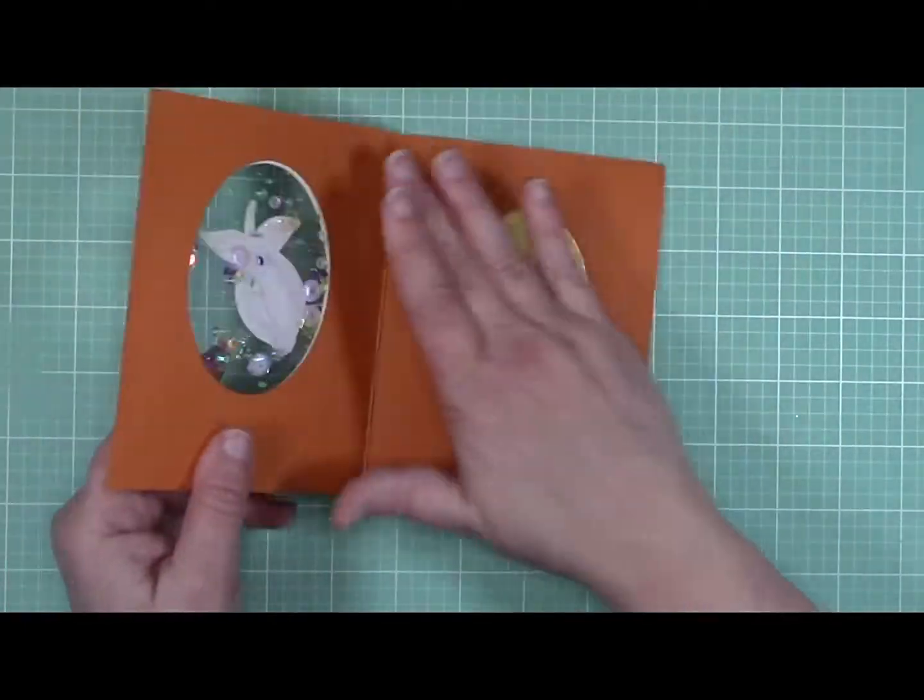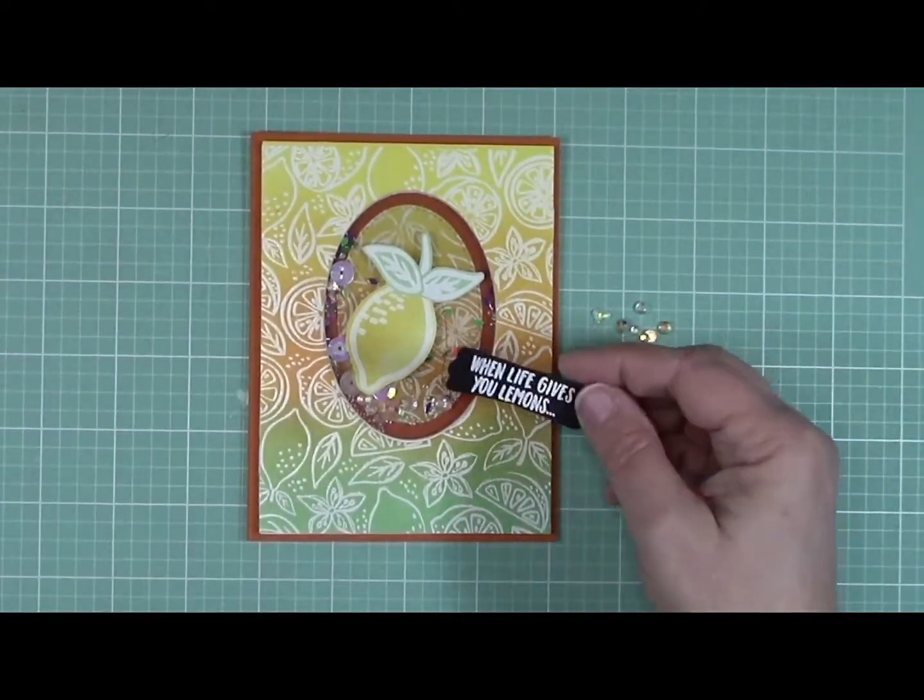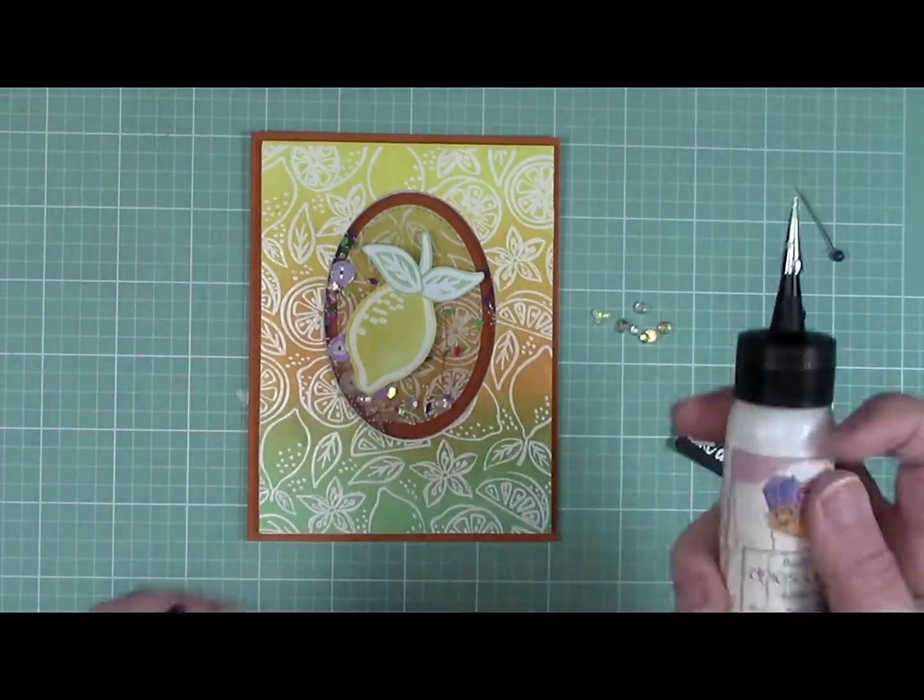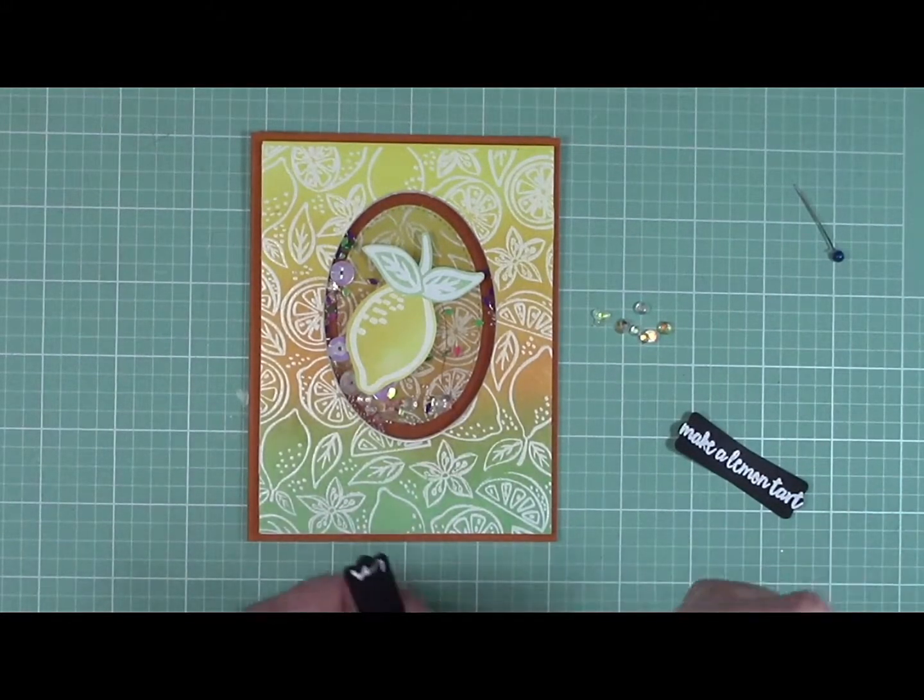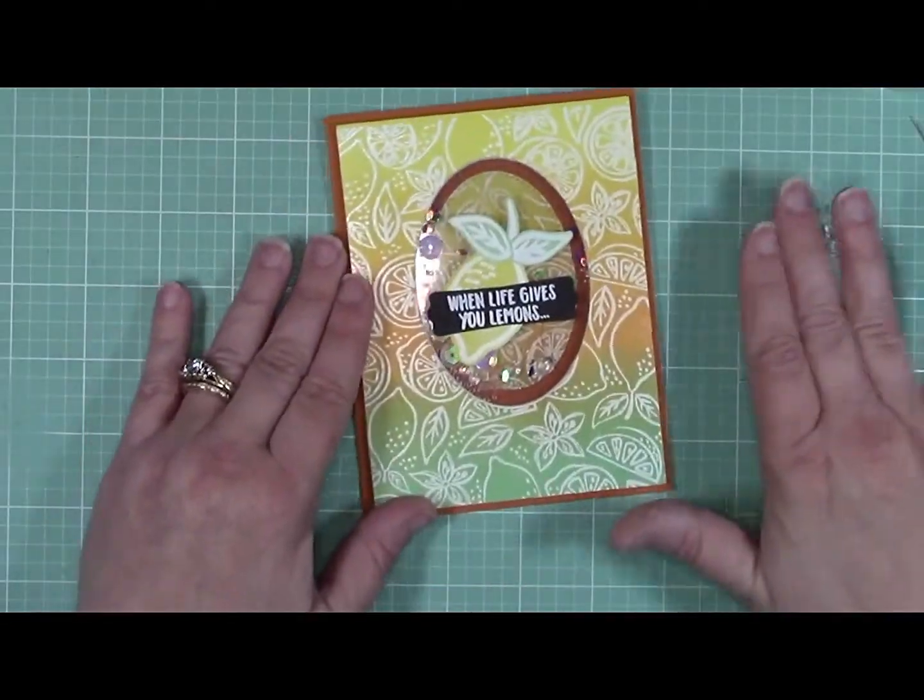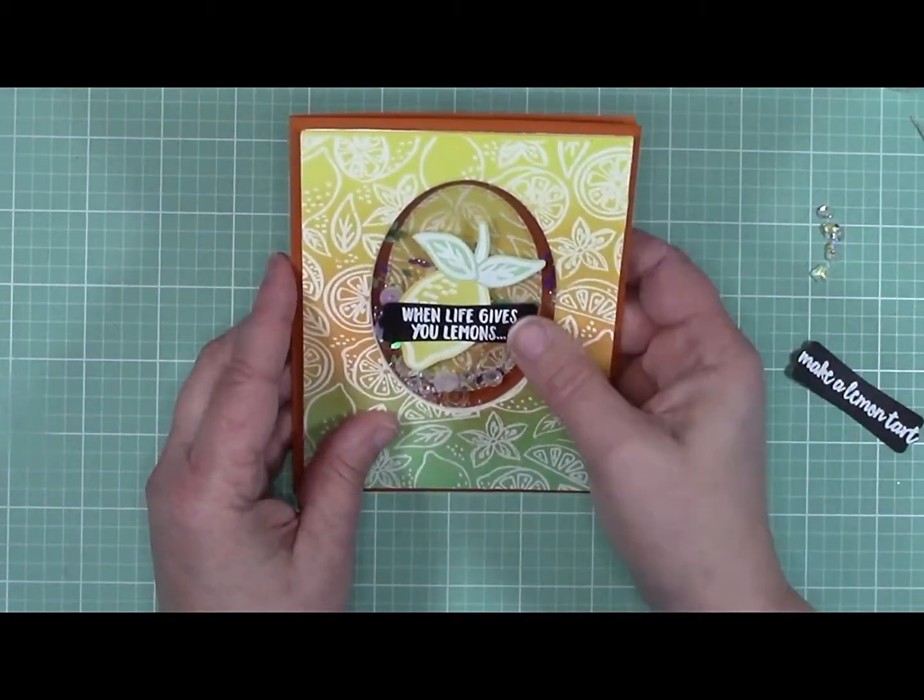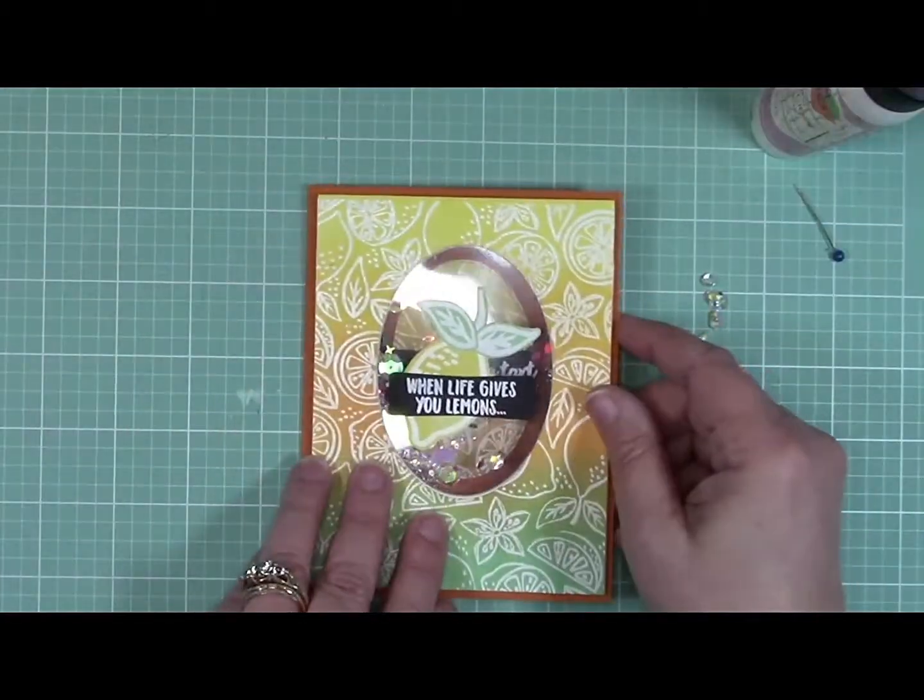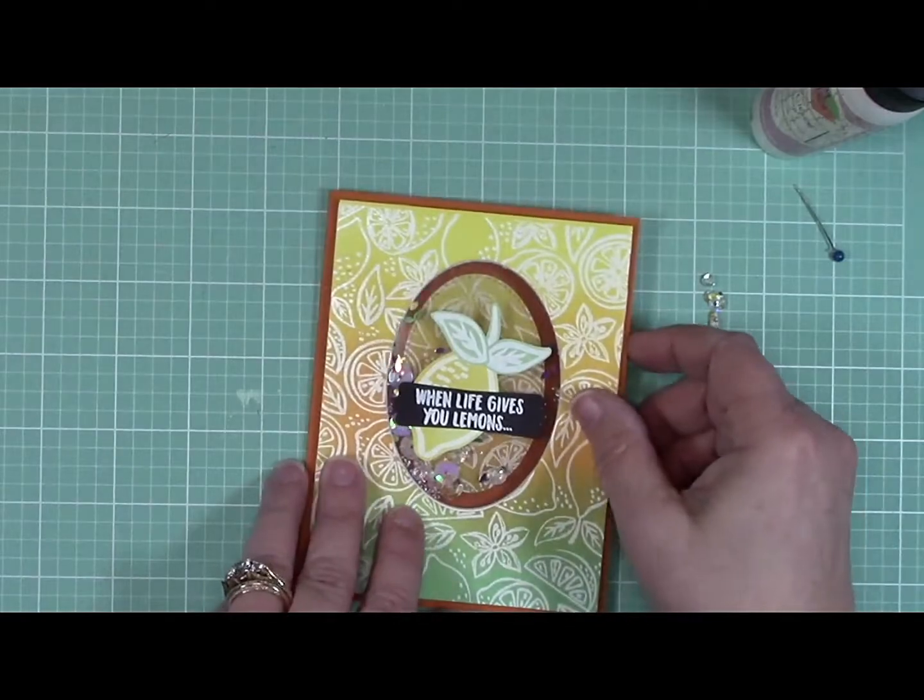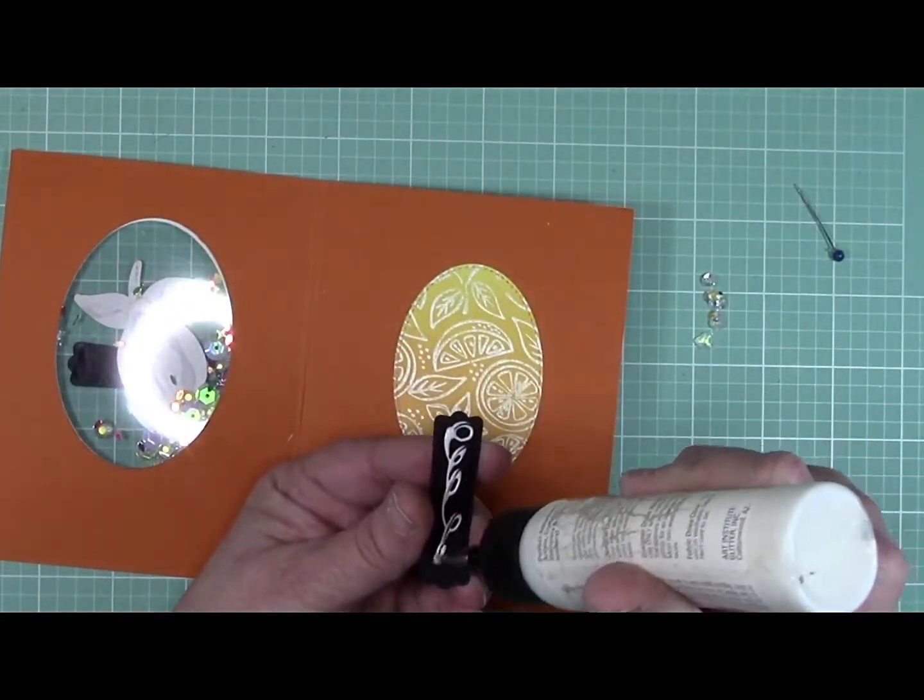Now I've just glued the die cut on top of the window, and the last thing to do is to put on the sentiments. Off-camera I made my sentiments—they are heat embossed with white powder again, but this time on black, and then cut out with a Stampin' Up punch. The front one says "when life gives you lemons," and then it's going to hide the back one so you don't see it until you open it. It's then going to say "make a lemon tart."